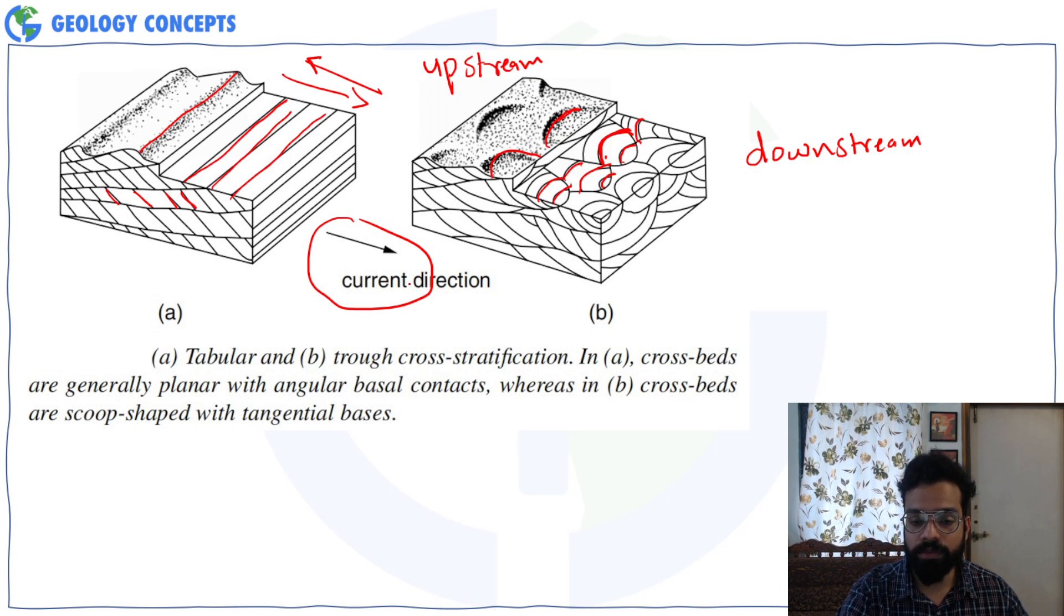So even if this current direction is not given, by looking at the traces over here, you will be able to pinpoint the current direction. So the correct answer over here would be trough cross stratification.